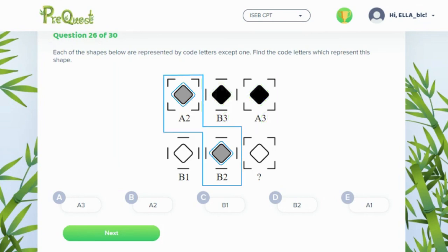Here we can see both of the shapes are grey and the second digit of their code is a 2. So the second letter or digit of the code must relate to the colour.